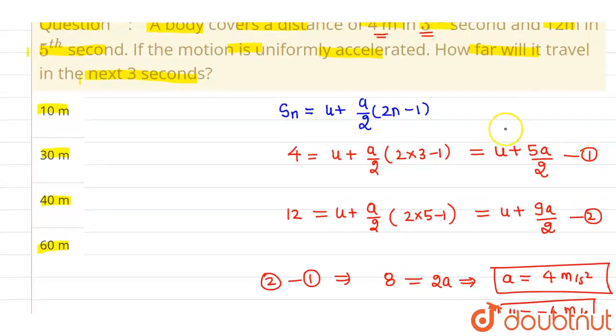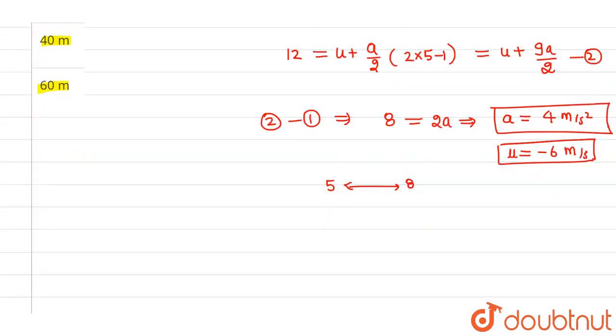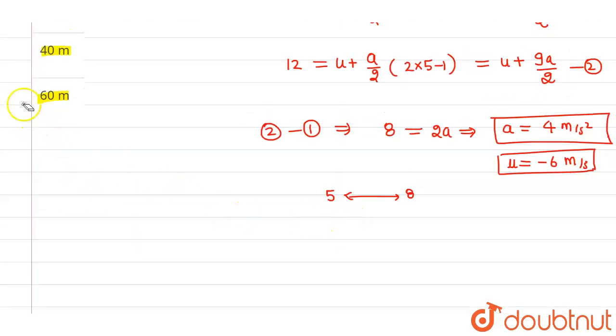Now we have to find out how far it will travel in the next 3 seconds. That means from time 5 to time 8, how much distance it will travel. Let's say this particular distance is d.